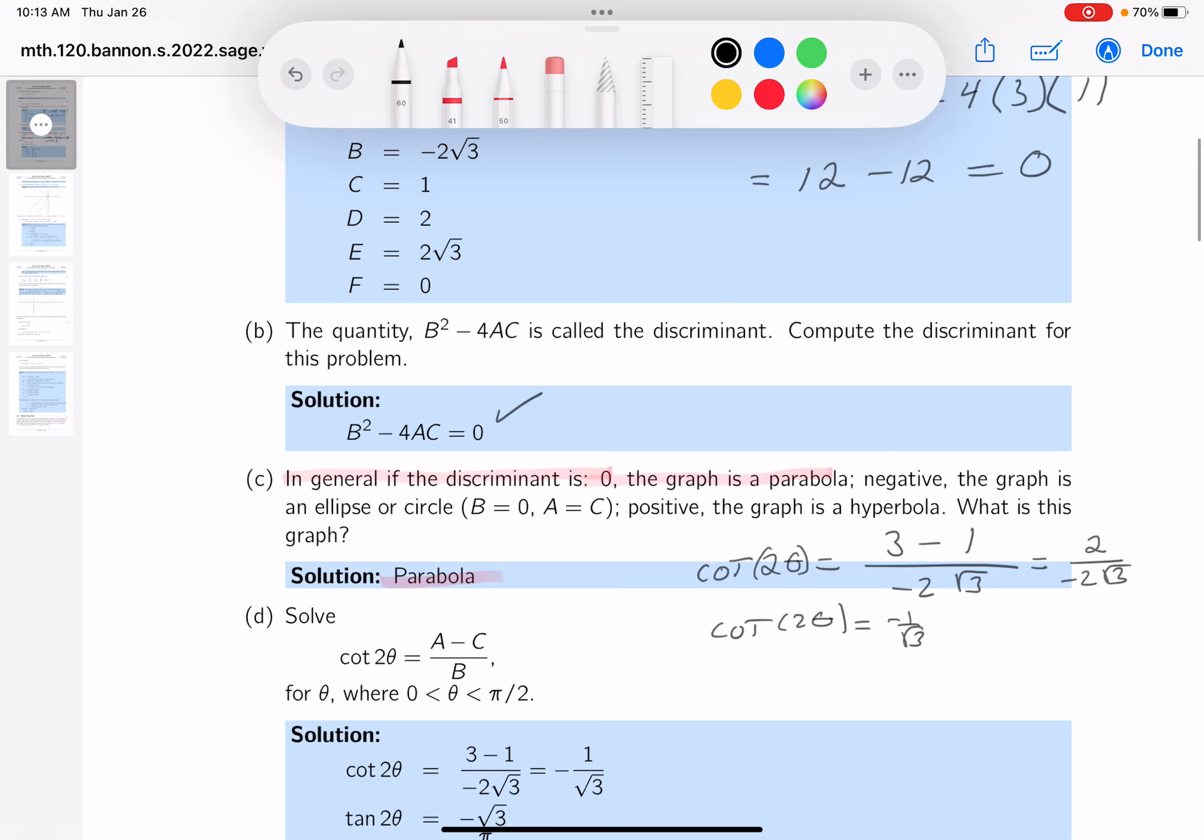By the way, I don't like cotangent. I'm going to write it as tangent. And that means tangent of 2 theta is going to be minus root 3. It's reciprocal.